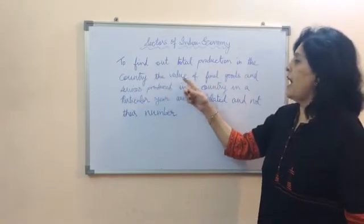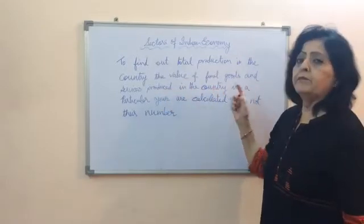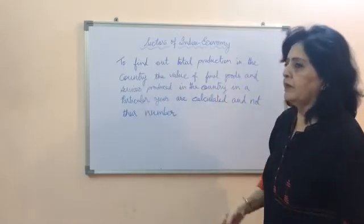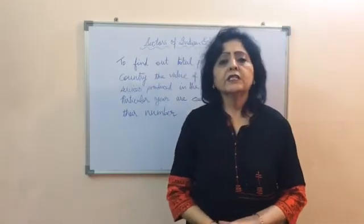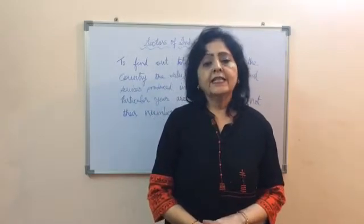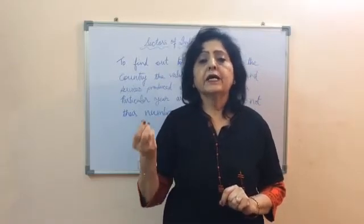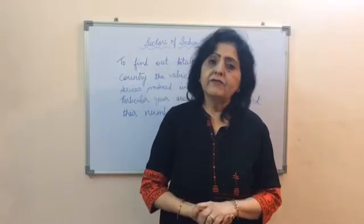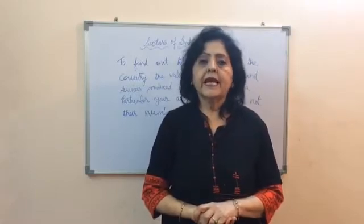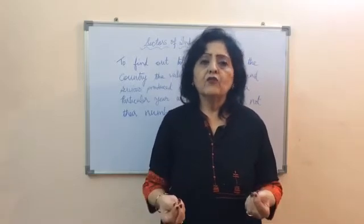The value of final goods and services produced in the country in a particular year is calculated, not their number. Suppose the production of wheat in the country in a particular year is 10,000 kg and it is sold at rupees 8 per kg, then the final value of wheat in that particular year would be rupees 80,000. In the same way, we calculate the value of all the goods and services produced within the country in a particular year.